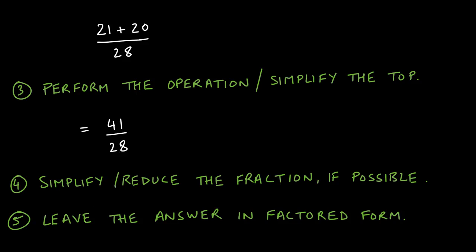Since simplification doesn't apply, we move on to step 5: leave the answer in factored form. There's nothing more that can be done because 41 is actually a prime number, so we cannot go any further. This is the solution.